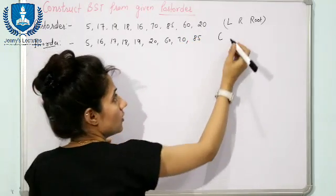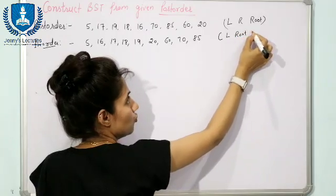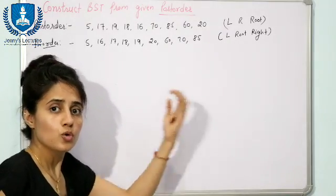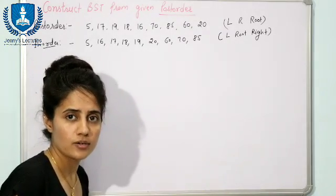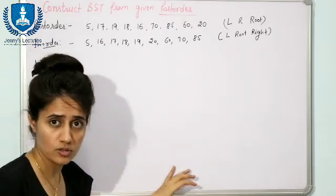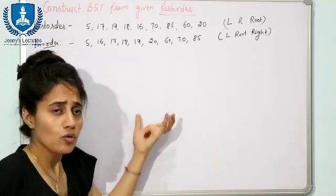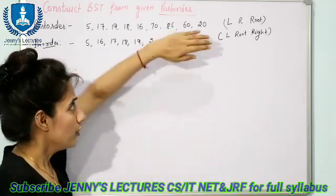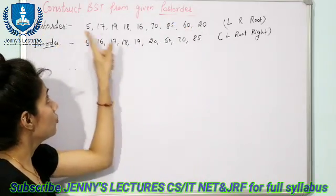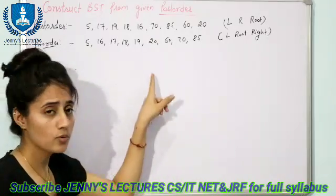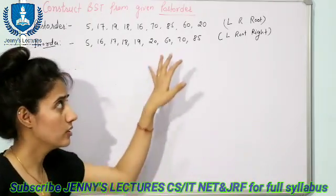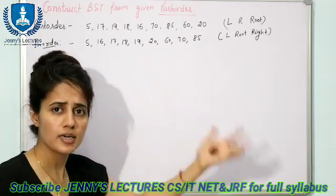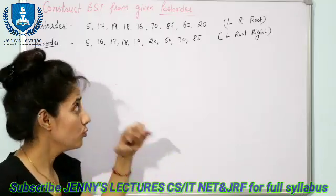Inorder traversal is left, root, right; pre-order traversal is root, left, right. Note that it's not strictly necessary to find the inorder first — you can construct the BST directly from the post-order traversal alone. But since we followed this approach in the previous video, we'll continue with it, because arranging elements in ascending order to get inorder is very easy.